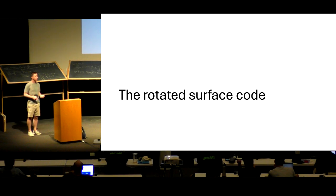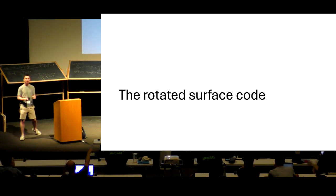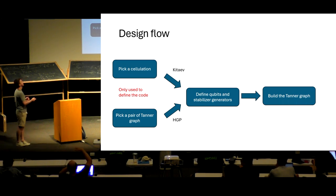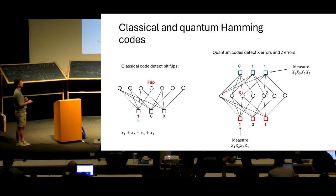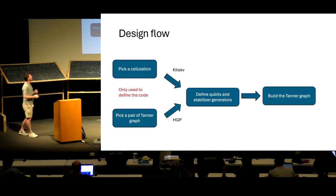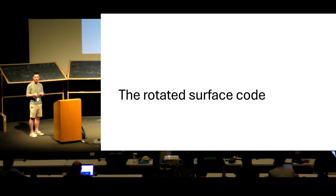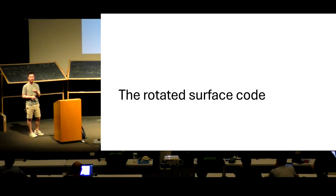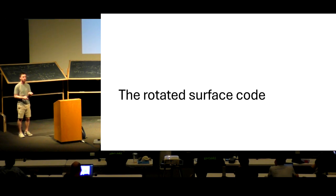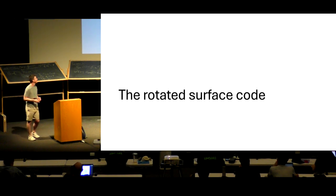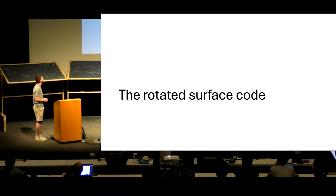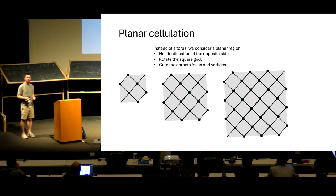From the definition of the code — the qubits and the stabilizer generators — we can build the Tanner graph and we are going to work with the Tanner graph only. We can forget about the initial manifold and the initial cellulation. In some cases it is useful, especially when something is planar 2D, meaning the code will be naturally planar. Another type of abstract object we use is the product of two graphs: hypergraph product codes. We take two Tanner graphs, take the Cartesian product, and based on that define stabilizers and qubits.